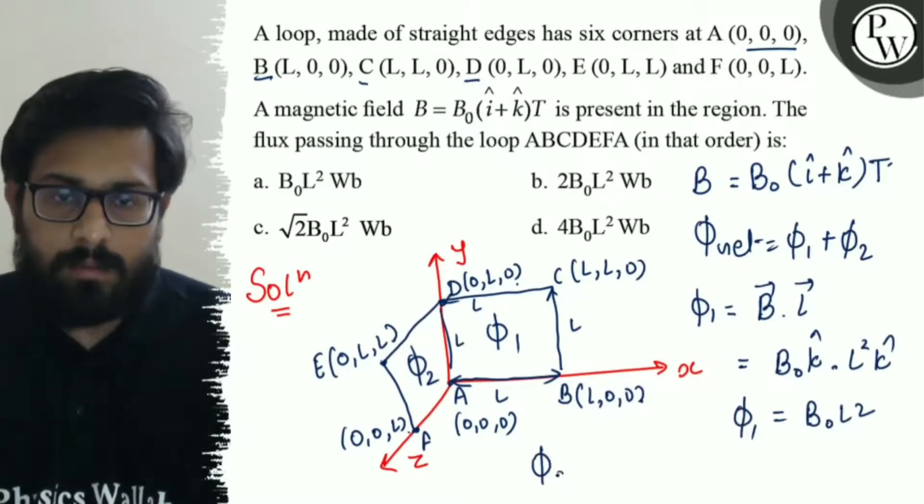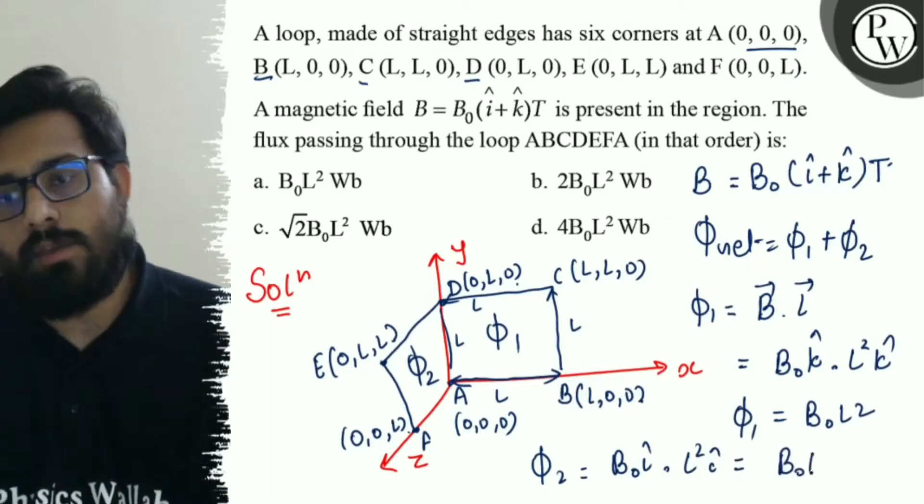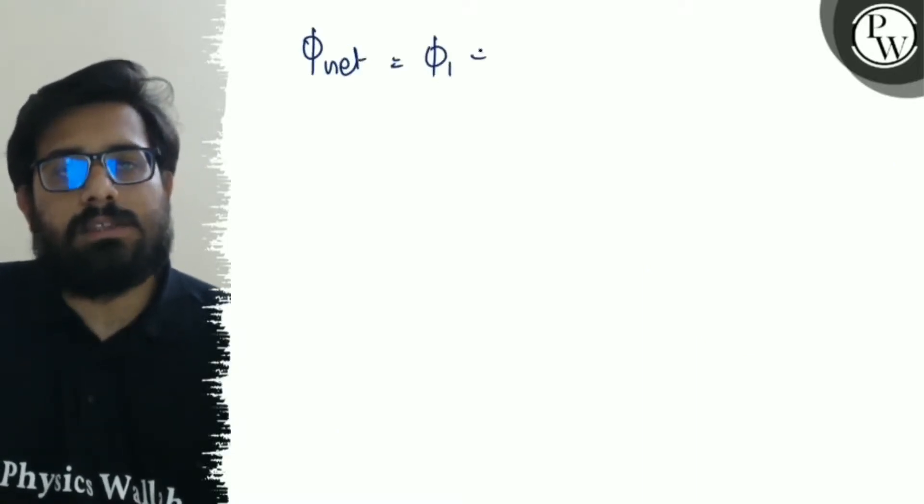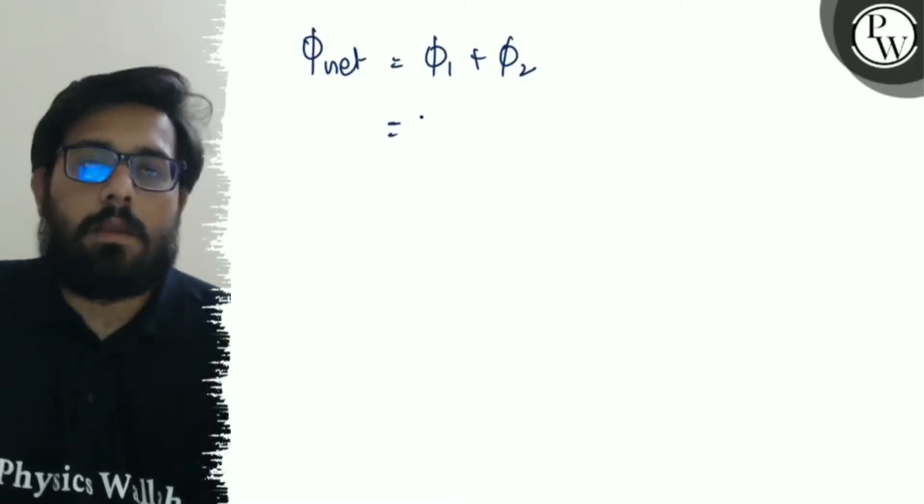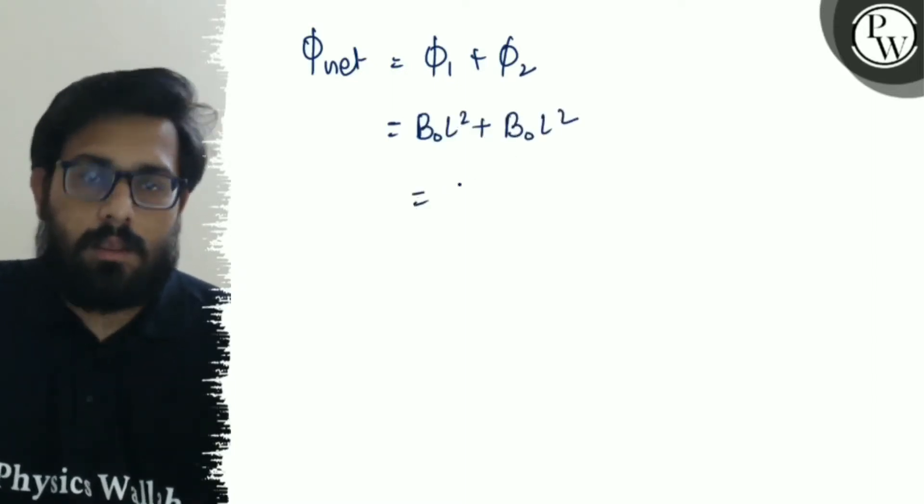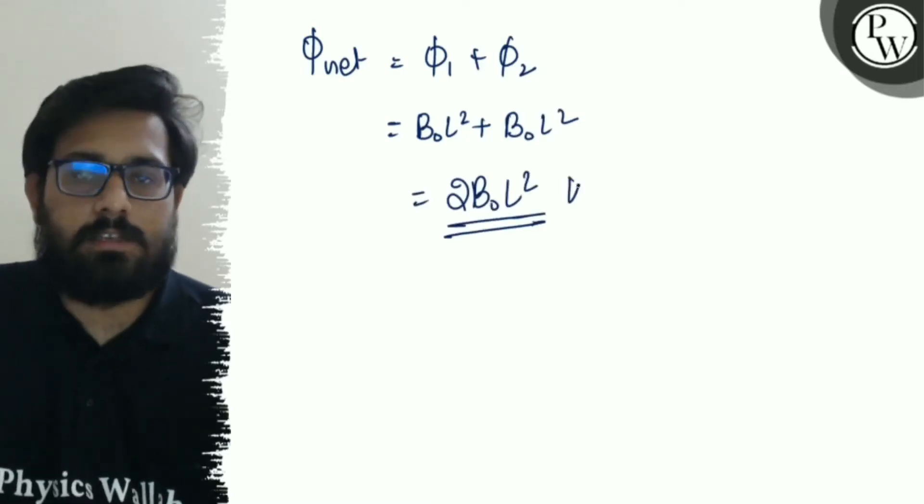Similarly, phi 2 can be written as nothing but B0 I cap dot L square I cap. This line comes out to be B0 L square. So, phi 1 key value will be B0 L square. Phi 2 key value will be B0 L square. So, phi net can be written as phi 1 plus phi 2, B0 L square plus B0 L square, 2 B0 L square is your final answer which is in Weber.